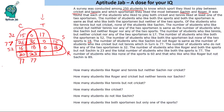The number of students who like none of the sports is 60, so that total region outside all sports is 60. This gives us 33 and 27 for the remaining sportsmen-only regions.